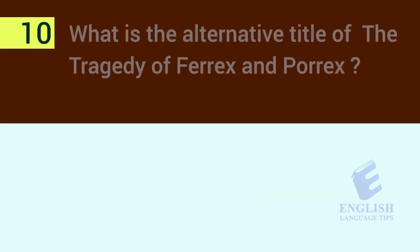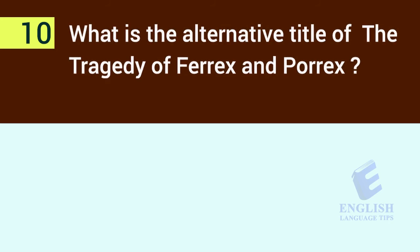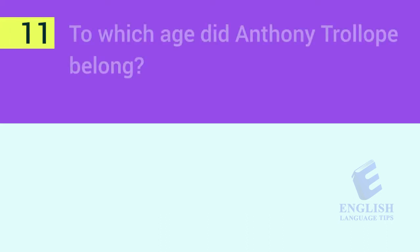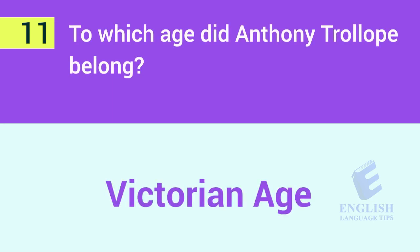Question 10: What is the alternative title of the tragedy of Ferrex and Porrex? The answer is Gorboduc, and this is probably the first tragedy written in English. Question 11: To which age did Anthony Trollope belong? The answer is the Victorian age.